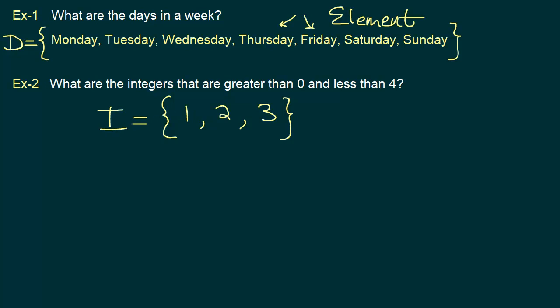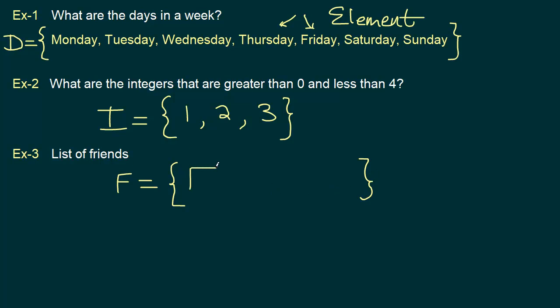Now let's take a look at a third example: a list of friends. Let's represent this collection by uppercase letter F, which will be our set. Now, my friends will be different from your friends. Let's say I have three friends and I represent each one of them by a box — so I have three elements. You may have four friends or ten friends or any other number. Clearly my friends will be different from your friends, but for each one of us it will be a clearly well-defined collection. So even though there is no absolute list of friends, it is clearly defined who is answering the question. It is still well-defined.